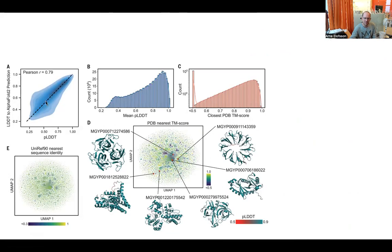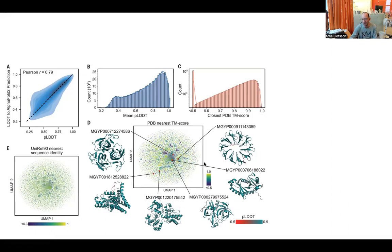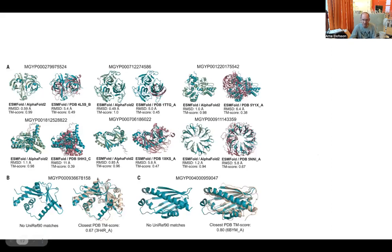Performance correlates strongly with PDB coverage: it does better for sequences that have PDB structures, and worse for things far away from known structures. They applied this to around 800 million metagenomic sequences, which was much faster because you don't need to compute 800 million MSAs. They found novel folds not similar to anything in the database from metagenomic sequences, which you can download today.